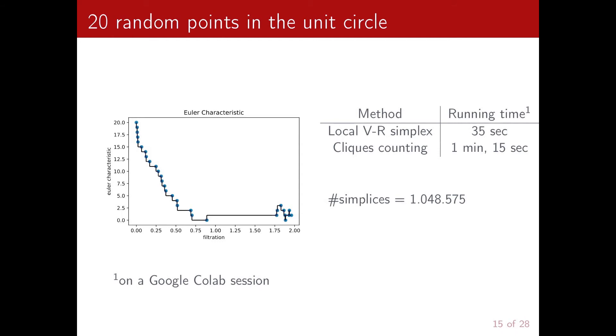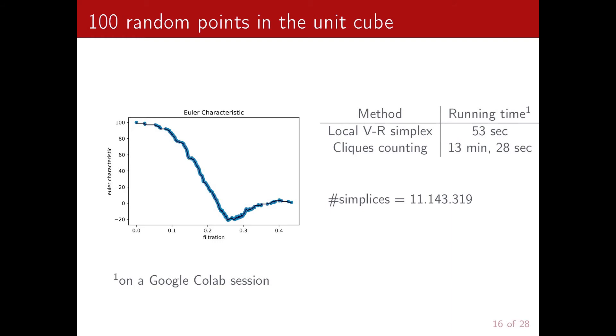I can show you some examples. And over here I compared the algorithm that I just described against a brute force clique counting over the full one-skeleton graph of the full Vietoris-Rips complex. And as you can see, our method is quite faster. So this is, for example, 20 random points in the unit circle and then 100 random points in the unit cube. And as you can see, the number of simplices grows very fast.